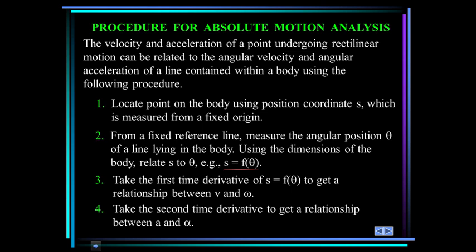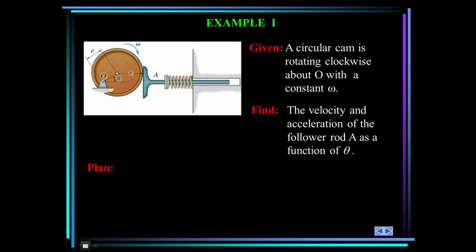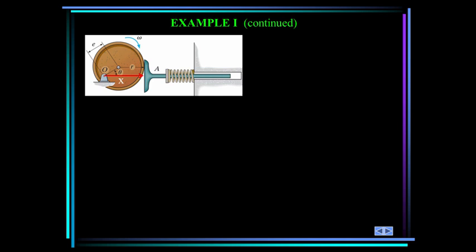Here's an example. We have a circular cam rotating clockwise about O with a constant angular velocity. Find the velocity and acceleration — define x as the distance between O and A, relate that x to the angular position theta, and then take the time derivatives of the position equation to find the velocity and acceleration relationships. The first step is to relate x and theta, that is, get x as some function of theta.